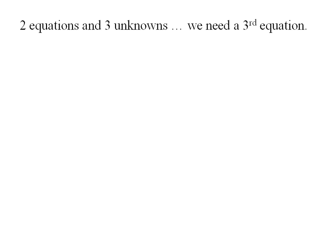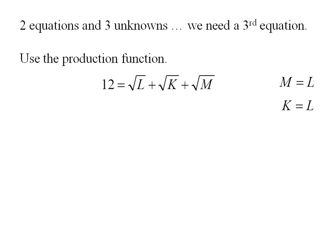Now I've got two equations and three unknowns so I'm going to need a third equation. Use the production function. I know that 12 has to equal the combination of these inputs. Then I also know that M is L and that K is equal to L.